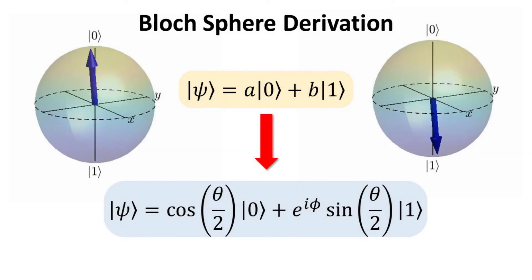We will show how to express the same qubit in the Bloch sphere representation, where the parameters theta and phi are the polar and azimuthal angles, respectively, in spherical coordinates. Hence, we will map the two complex amplitudes A and B onto the geometrical variables theta and phi.